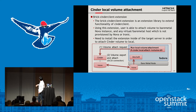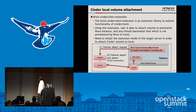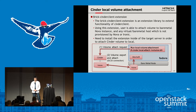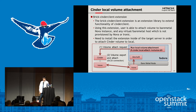This shows the summary sequence of Cinder local volume attachment. First, the user installs the brick client extension into the server, then runs Cinder local volume attachment with the option of volume ID or volume name. After that, the client extension sends a volume attach request to Nova and Cinder. Cinder creates an export to the bare metal server. Then the client extension connects to the iSCSI volume from the server side.